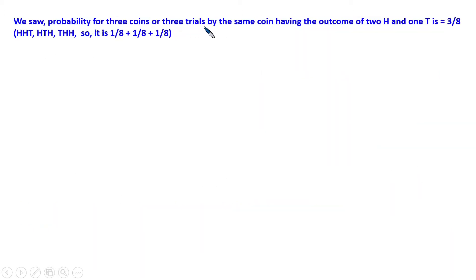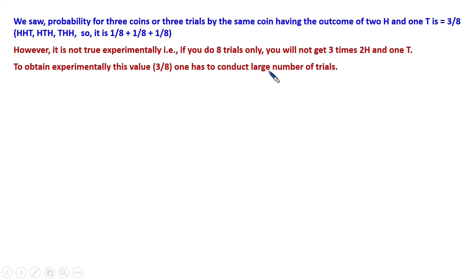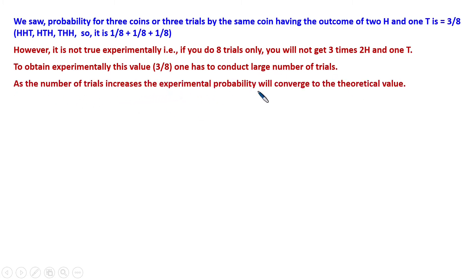We saw the probability of three coins or three trials by the same coin having the outcome of two heads and one tail is three by eight. However, this is not true experimentally — if you do only eight trials, you will not necessarily get exactly three times the outcome of two heads and one tail. This is theoretical. To obtain experimentally a value close to three by eight, one has to conduct a large number of trials. As the number of trials increases, the experimental probability will converge to the theoretical value.